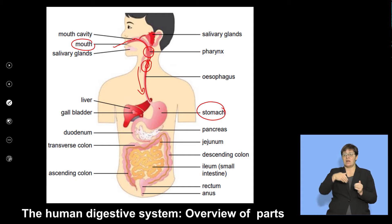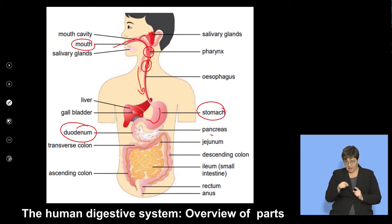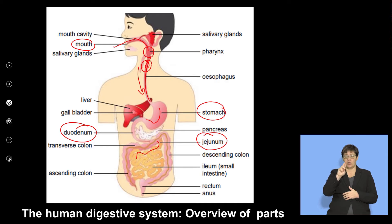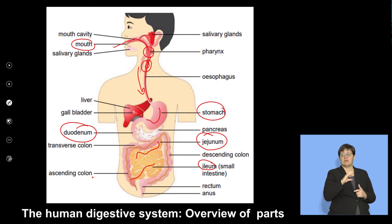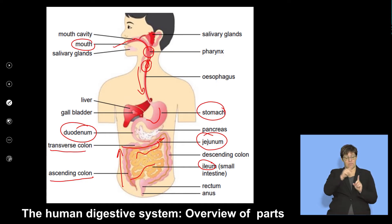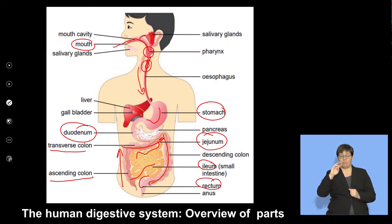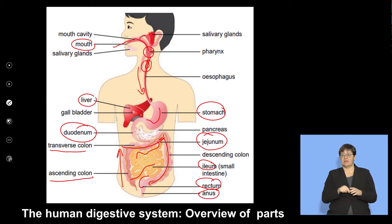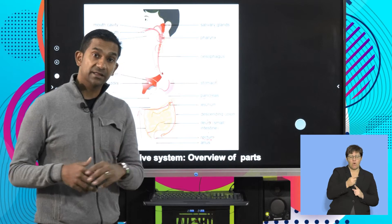Food moves through peristalsis from the stomach into the small intestine, of which the first part is the duodenum, followed by the middle part called the jejunum, which ends in the ileum. That connects to the large intestine or colon: the ascending, transverse, and descending colon, where undigested food is stored in the rectum until released through the anus. The accessory organs include the liver, which produces bile stored in the gallbladder, then released into the duodenum for the digestion of fats and other complex molecules.